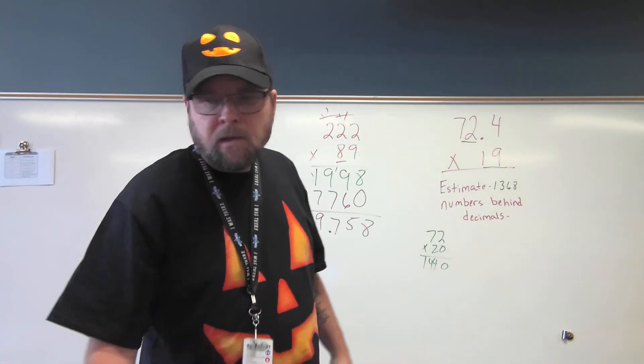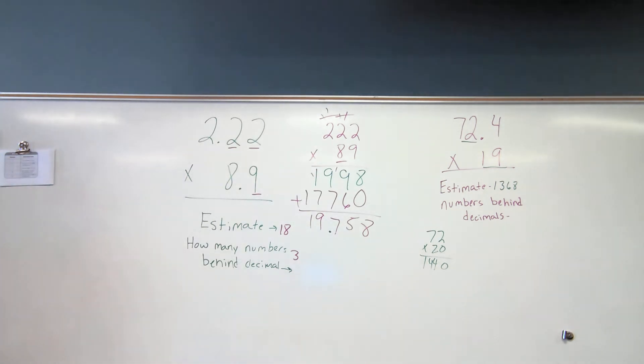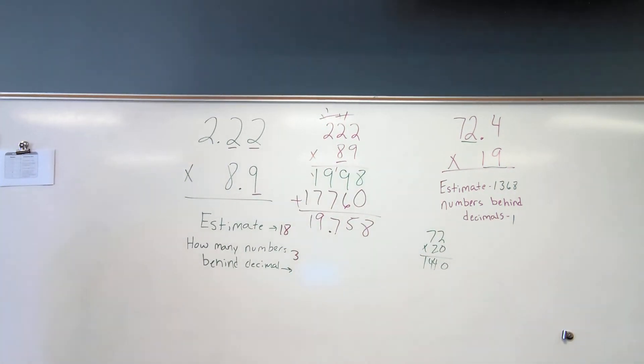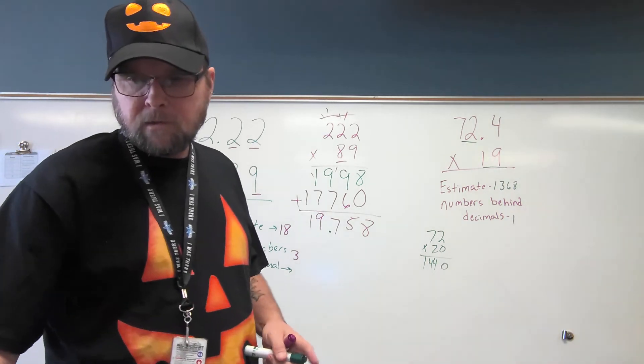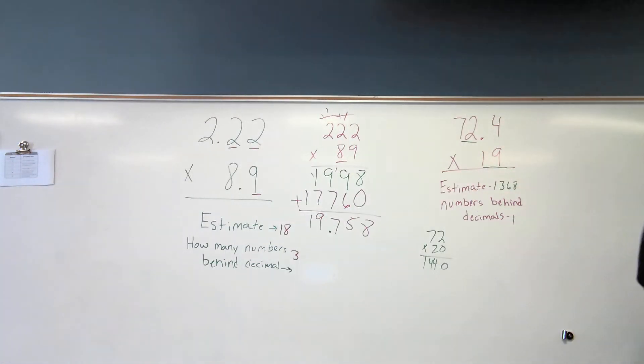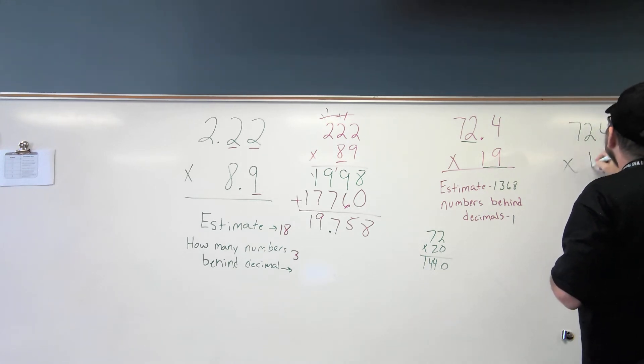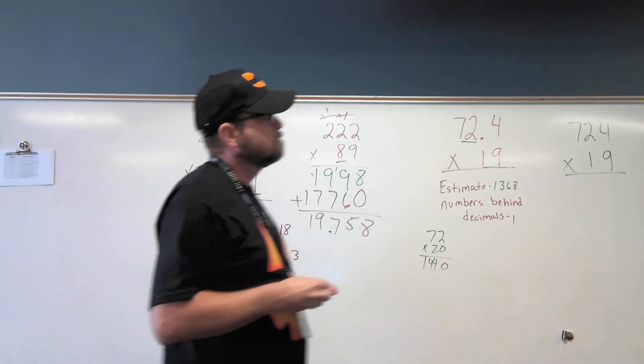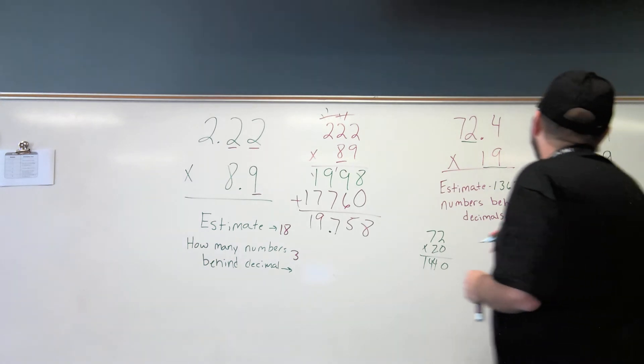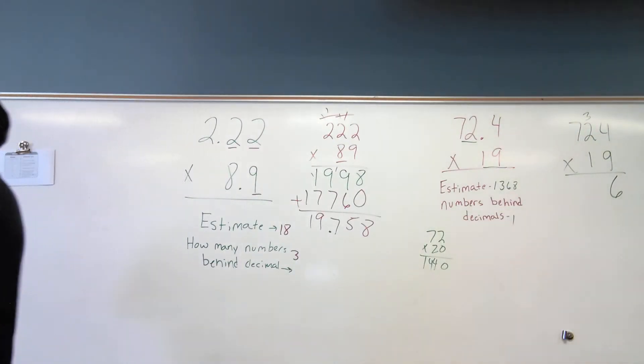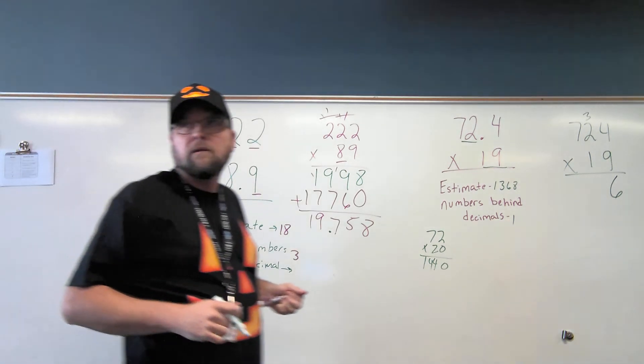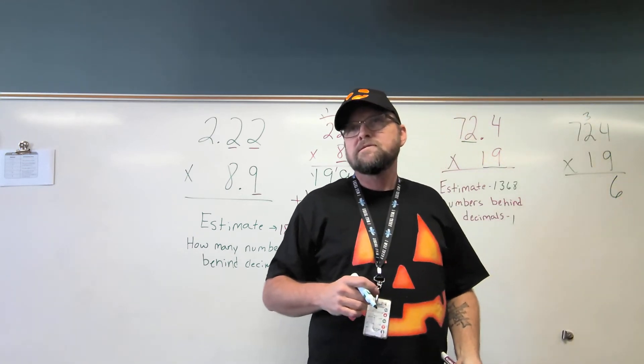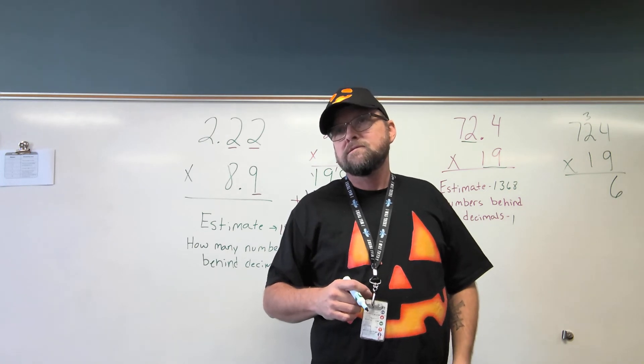And Davis, how many numbers behind the decimal point in my answer? One. One. Because there's only one number behind it in the problem. Very good. Let's go here with Buddy. What is nine times... Well, let me rewrite it over here. 724 times 19. So, Buddy, what's nine times four? 36. 36. Buddy, what's nine times two? Plus three? 9 times two is 18. 18 plus three is? 18 plus three.